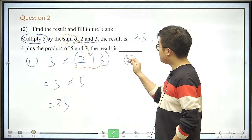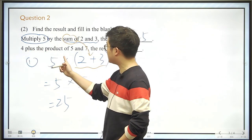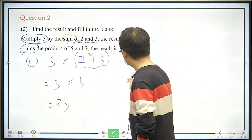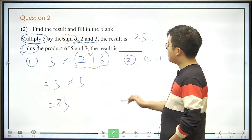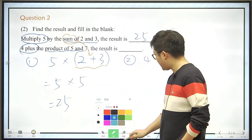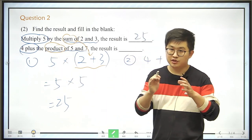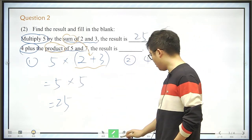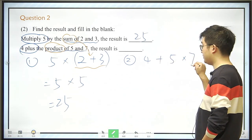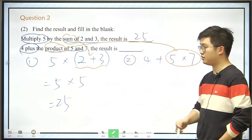And for the second one, we also take a look at it. It says that 4 plus the product of 5 and 7. We said it before that the product is the result of multiplication, right? So we should multiply 5 by 7. This is the product we need.